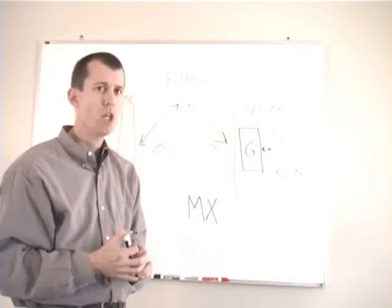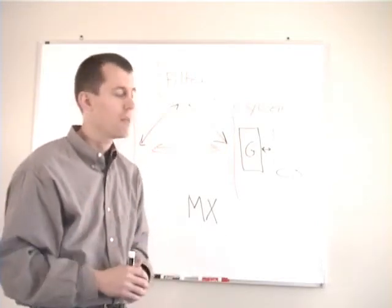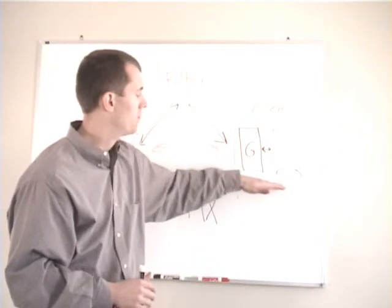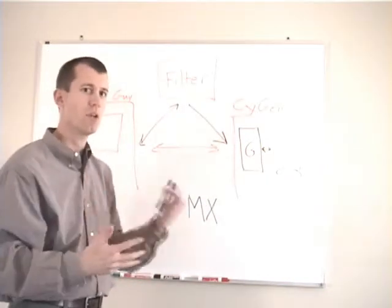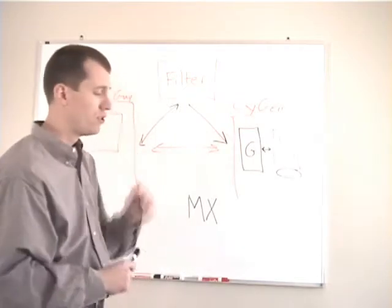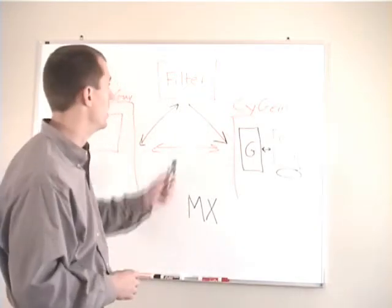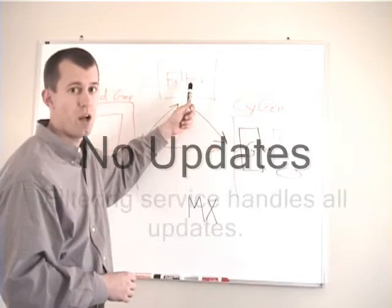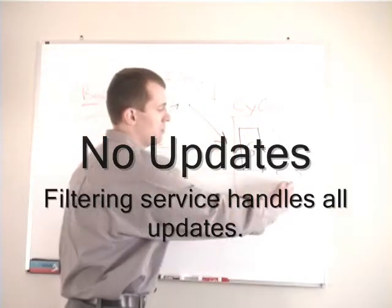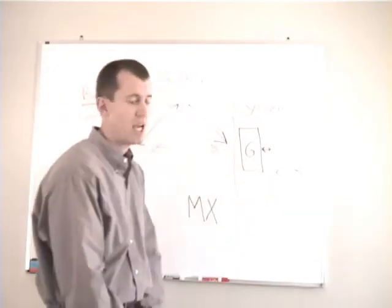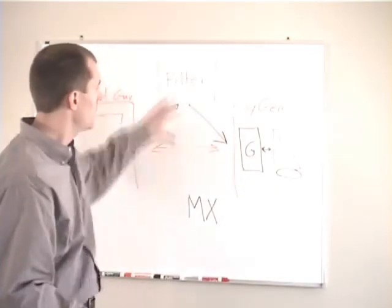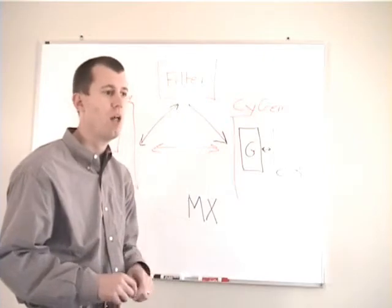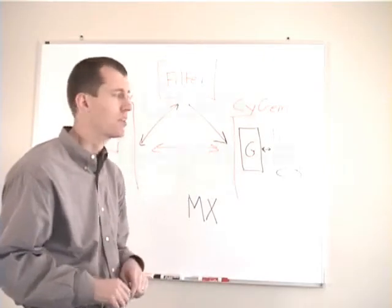So, why would you want to use one model versus the other? Traditionally, this is what's been done, but people are starting to move more to this filtering-based approach. And let's talk a little bit about why. The first is, there's no updating to be done. Any updates that are done are done here. So there's no updating of software. There's no updating of gateways. There's less physical equipment on site. And since these filtering services process so much email, they can respond much quicker to threats.